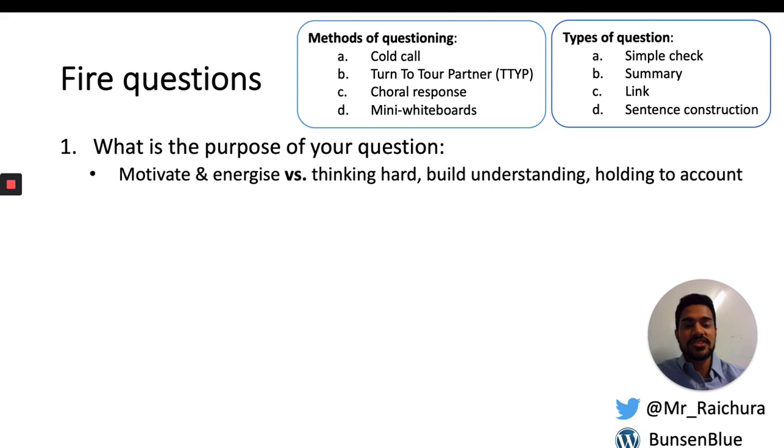And finally, there's sentence construction where you want them to really practice specific language. You might give them certain words and you're getting them to build up a sentence using the words. Tell your partner a sentence that uses the words alkali metals and low density. Go. And you'd hope that they might say something like, one of the properties of the alkali metals is that they have a low density. And you might have to correct them and give them feedback because they may not use those words correctly in a full sentence.